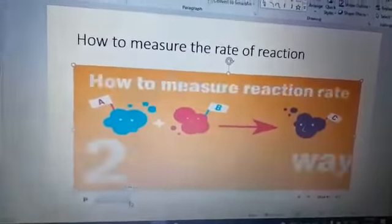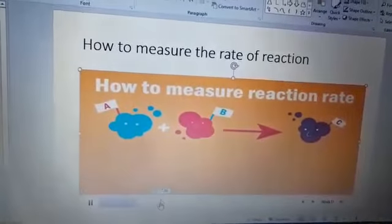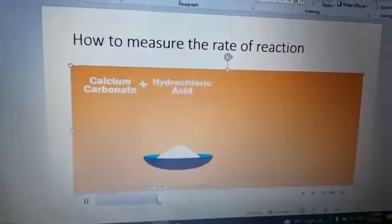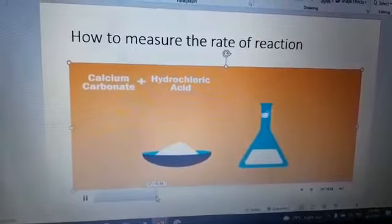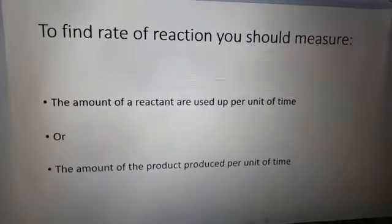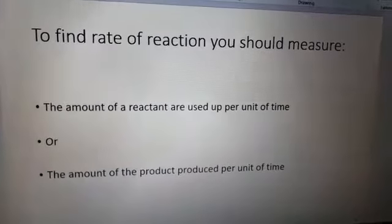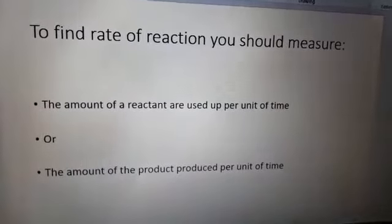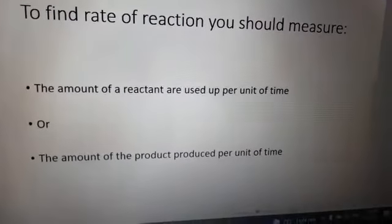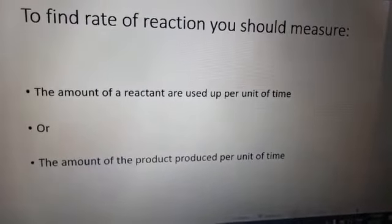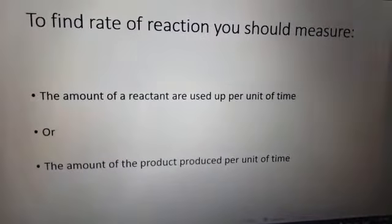After watching the video the students can understand that to find the rate of reaction you should measure the amount of reactants used up per unit of time or the amount of the product produced per unit of time.